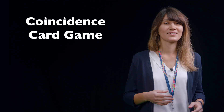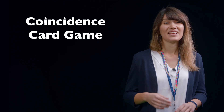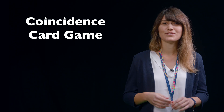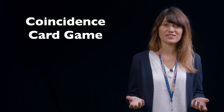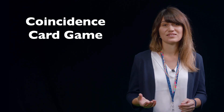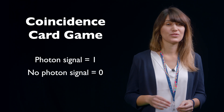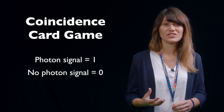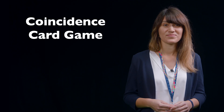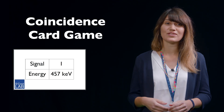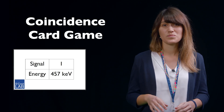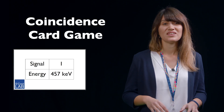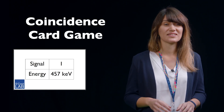To fully understand the principle of coincidence measurement, we will play the coincidence card game. It works as follows: I will show you two cards in each measurement round. Each card represents one of the two detectors. On each card is listed whether there is a photon signal or no photon signal. You will also see the energy of the detected photons. For example, on this card, a photon is measured with an energy of 457 keV. However, the energy information is not important in our case. We just focus on whether there is a photon signal or not.